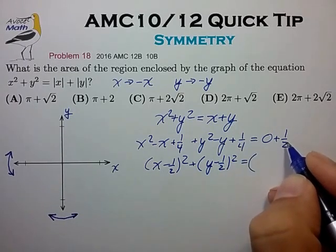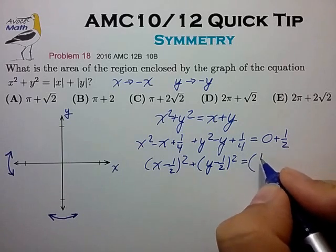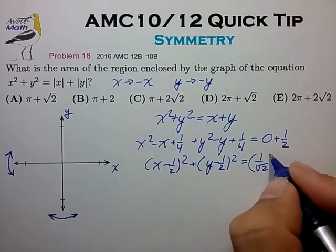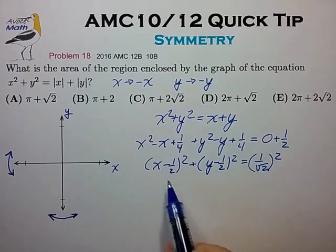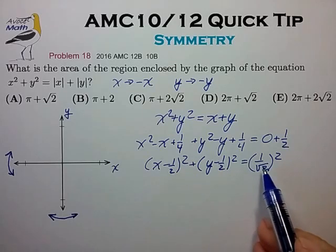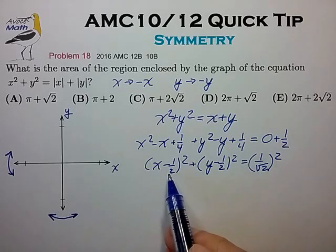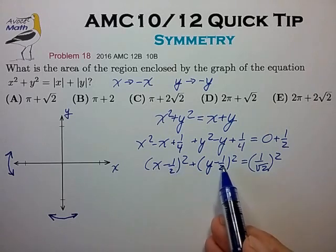And we can try to write this in terms of a square. To find that we now have a circle of radius one over root two centered at the coordinates one half, one half. So that seems pretty easy to draw now.